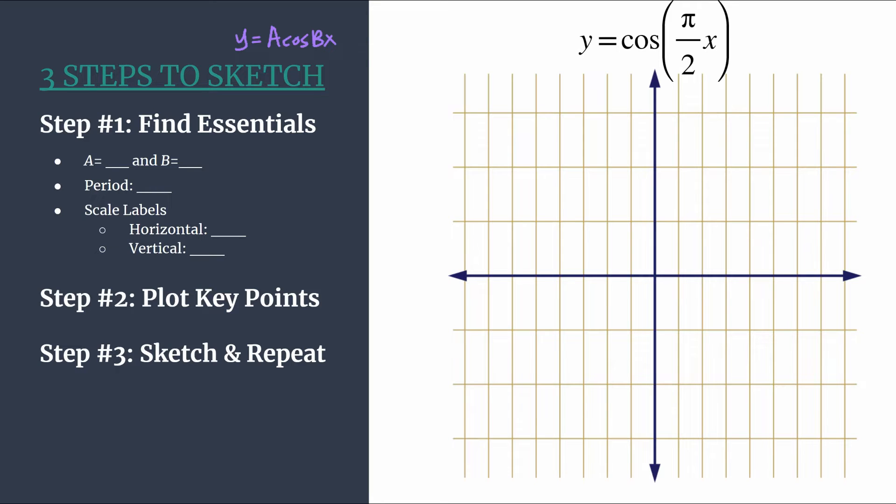So let's jump in and start by finding our essentials a and b. We understand that there's a one in front of cosine as the coefficient. So we know our a is one, our amplitude of the graph is one. That's the distance from midline to either max or min. And we see our b is this number here pi over two.